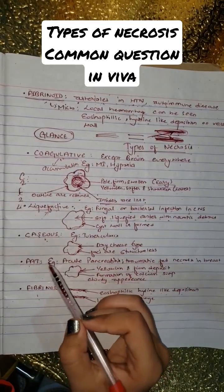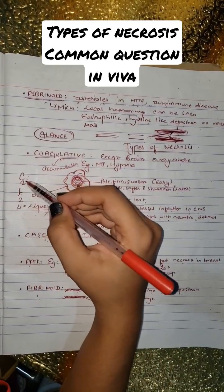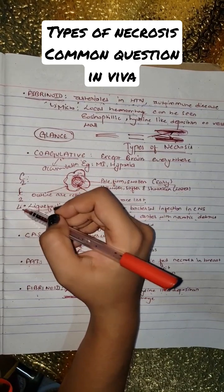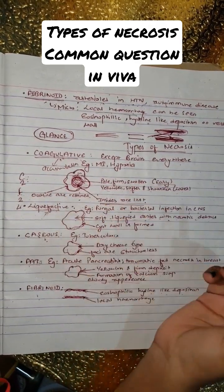The types of necrosis are coagulative, liquefactive, caseous, fat, and fibrinoid. We can remember this through C2, F2, and L: coagulative, caseous, fat, fibrinoid, and liquefactive.